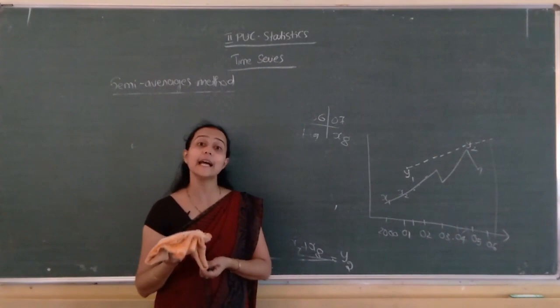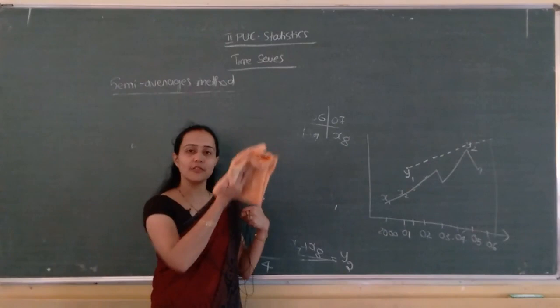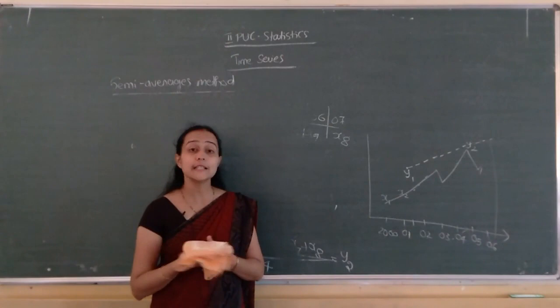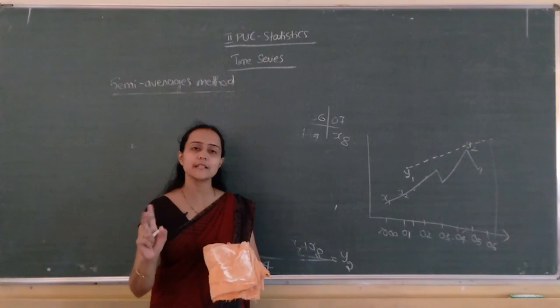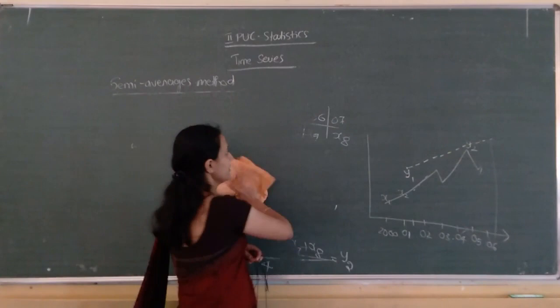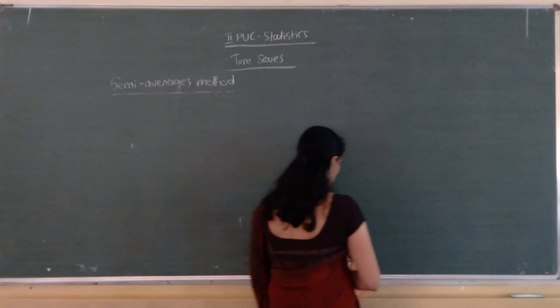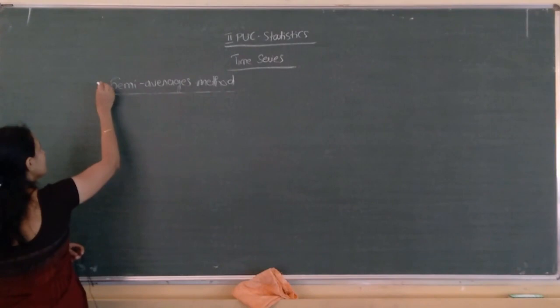One more important point: if nine observations are there, how can you divide them? With nine observations, we take the first four and the last four, and leave out the middlemost one observation. Similarly, if seven observations are there, we take the first three and next three, and leave out the middlemost observation. We will do problems covering these cases as well.